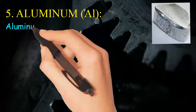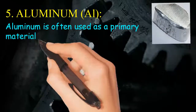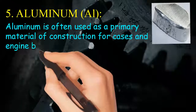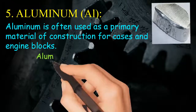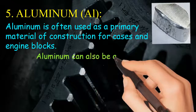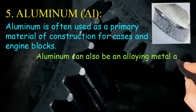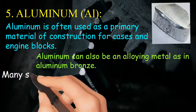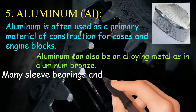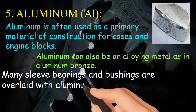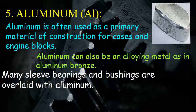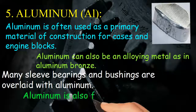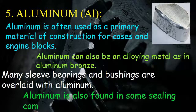Aluminum. Aluminum is often used as a primary material of construction for cases and engine blocks. Aluminum can also be an alloying metal, as in aluminum bronze. Many sleeve-bearings and bushings are overlaid with aluminum. Aluminum is also found in some sealing compounds.